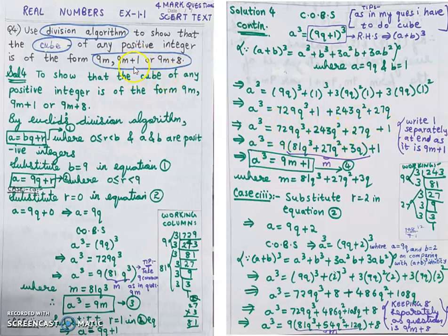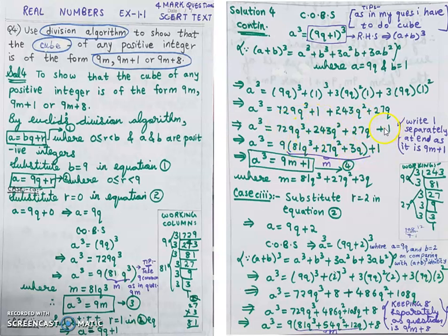Taking 9 common: 729 = 9 × 81, so 729q³ = 9 × 81q³; 243 = 9 × 27, so 243q² = 9 × 27q²; and 27q = 9 × 3q. So a³ = 9(81q³ + 27q² + 3q) + 1. Assuming the bracket as m, we get a³ = 9m + 1. Case 2 is proved.